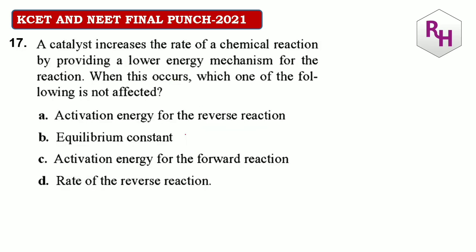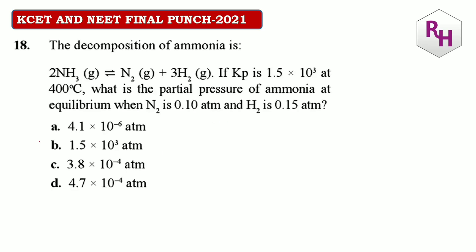17th: catalyst increases the rate of chemical reaction by providing a lower activation energy pathway. Which of the following is NOT affected? Activation energy of the reverse reaction — definitely affected. Equilibrium constant — remember, equilibrium constant is NOT affected by a catalyst. So the answer for this question should be B.